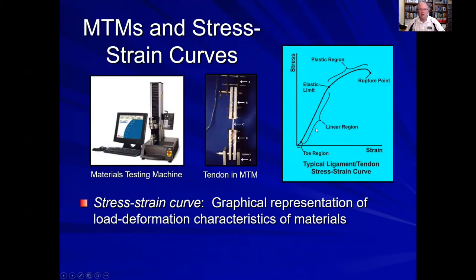In the world of biomechanics, we use a machine called a materials testing machine in order to subject tendons, ligaments, bone, cartilage, and skin to either compression, tension, or torsional loading forces to determine their mechanical characteristics. When we clamp a piece of tendon in this machine, stretch it, and measure the force and amount of stretch, we end up with what's called a stress-strain curve.